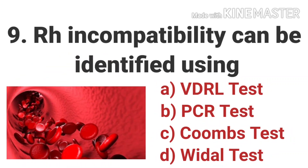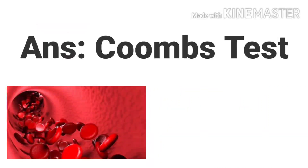The ninth question is: RH incompatibility can be identified using which test? Options are VDRL test, PCR test, Coombe test, and Widal test. The answer is Coombe test. The Coombe test includes the direct and indirect Coombe test. The direct Coombe test detects antibodies stuck to the surface of RBCs. The indirect Coombe test detects antibodies floating freely in the blood. RH incompatibility is identified using the Coombe test.